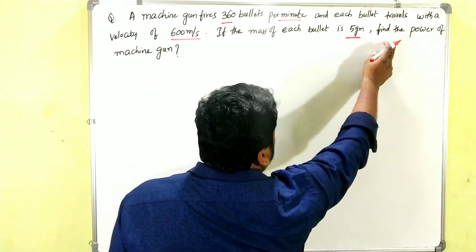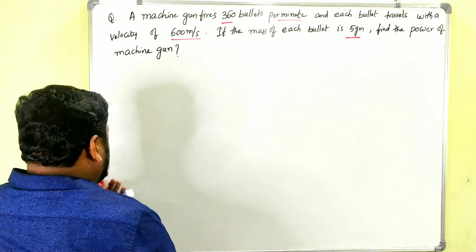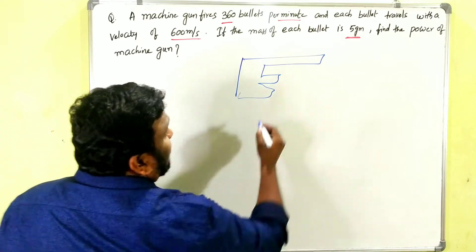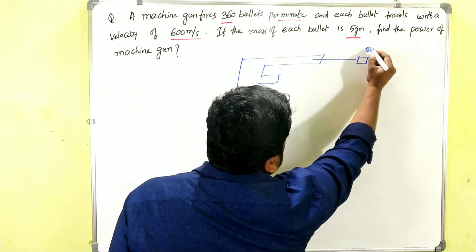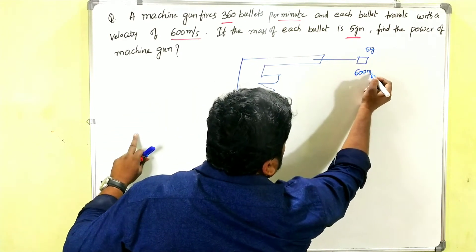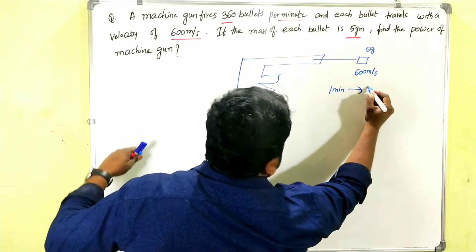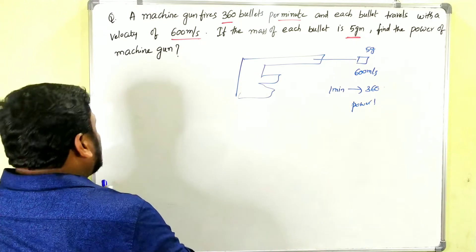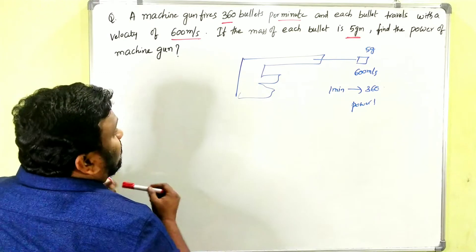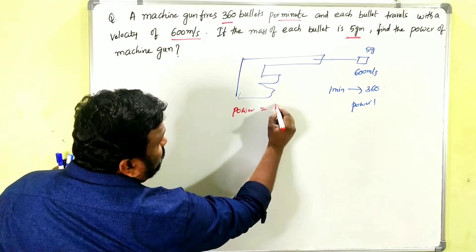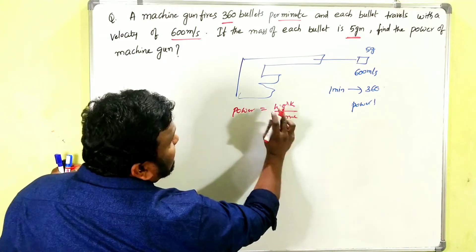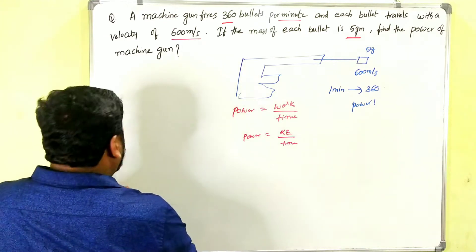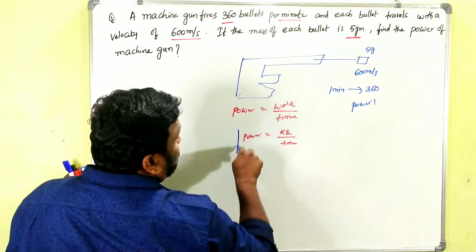We need to find the power of the machine gun. In one minute, the gun fires 360 bullets. Power equals work divided by time. In this case the work is in the form of kinetic energy, so we write: Power = Kinetic Energy / Time. Simply, P = KE / T.